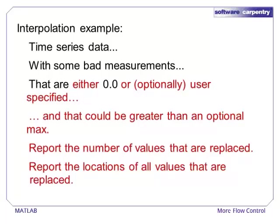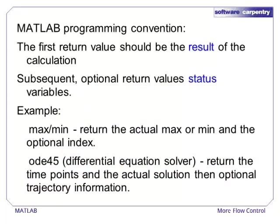First, we will let the user choose a range of acceptable measurements by specifying a lower bound other than the default of zero, as well as by letting them choose an upper bound. We will also add a few status variables to the output. In our new function, we will follow a general MATLAB convention. The first return value should be the result of the calculation, and generally, that value means the same thing no matter how many return values are requested.